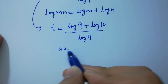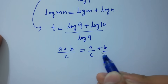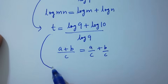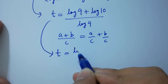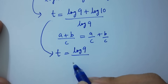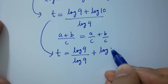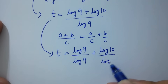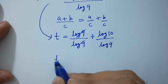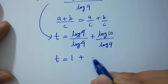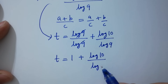Since a plus b over c equals a over c plus b over c, we get t equal to log 9 over log 9 plus log 10 over log 9. Log 9 and log 9 cancel, so t equals 1 plus log 10 over log 9.